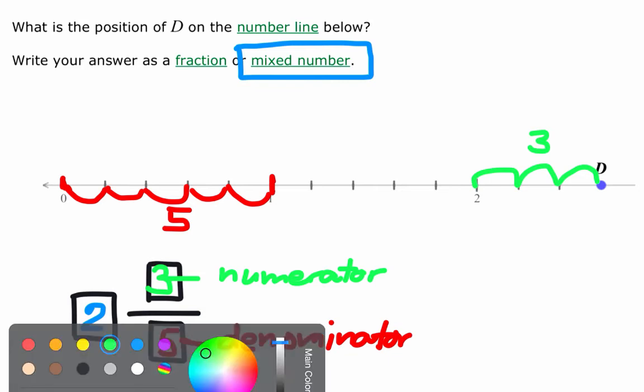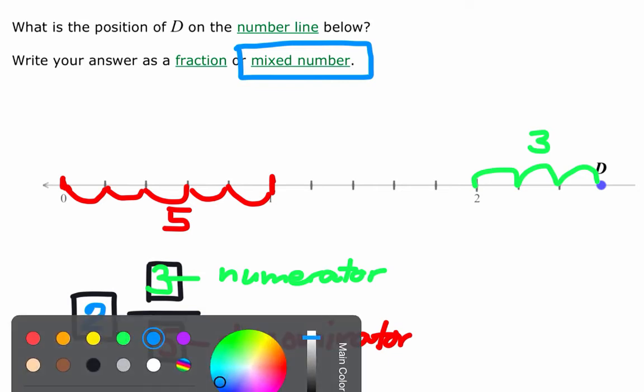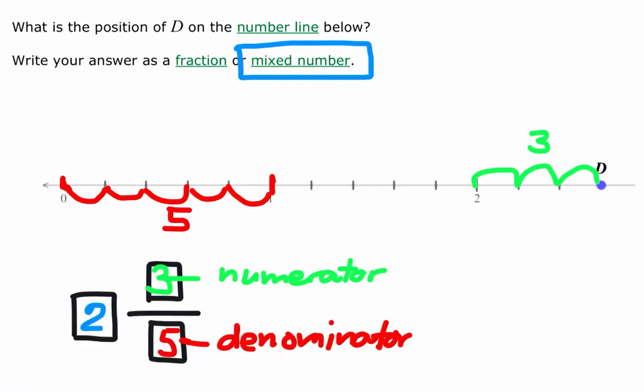The answer for the mixed number representing point D is equal to the mixed number 2 and 3 fifths.